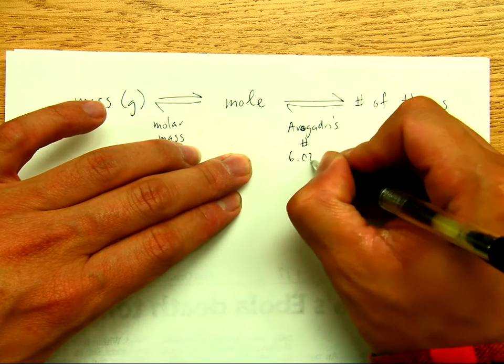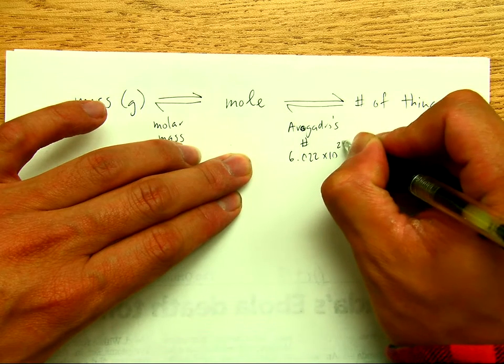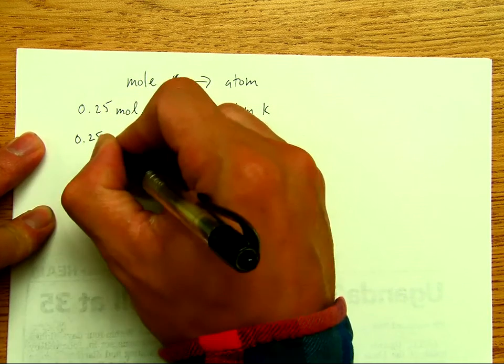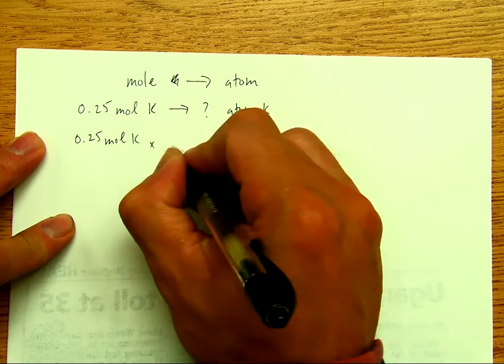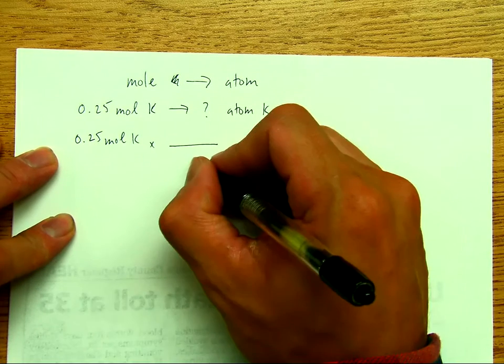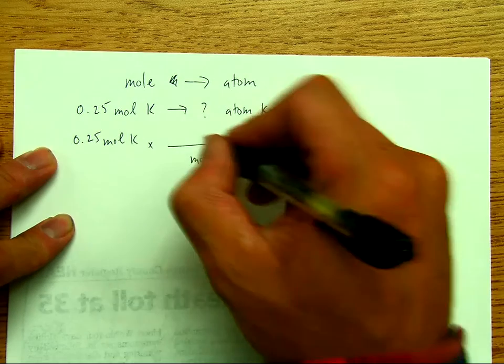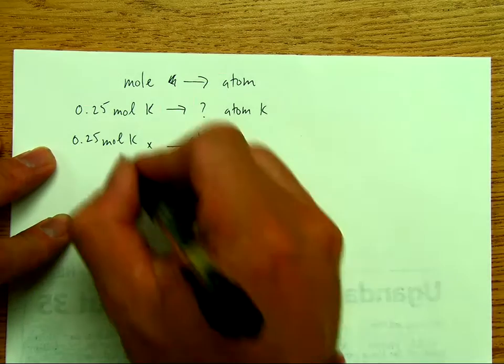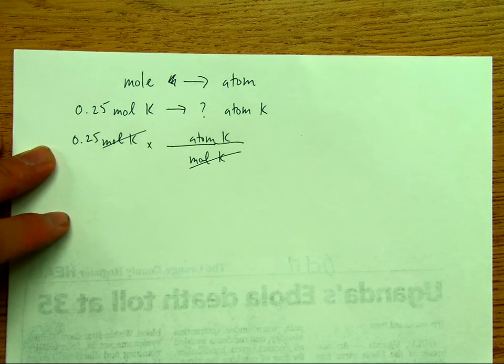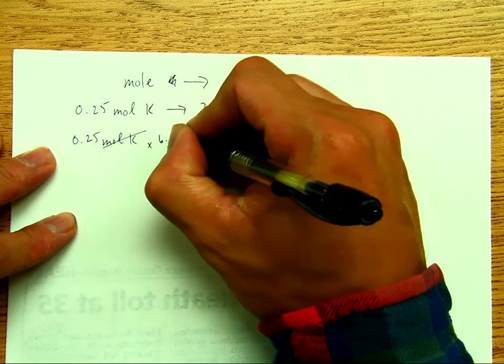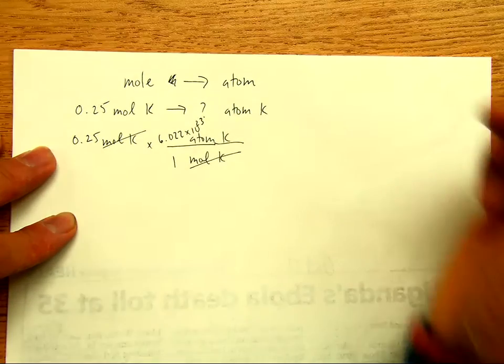And that is 6.022 times 10 to the 23rd. So we rewrite 0.25 mole of potassium. Now we want to cancel the mole, so we'll write mole of potassium on the bottom and we'll write atom of potassium on top. That will cancel the moles. Now the relationship for every one mole is Avogadro's number, which is 6.022 times 10 to the 23rd atoms.